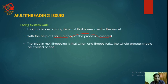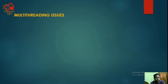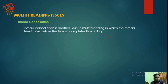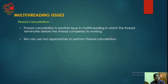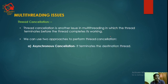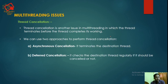The issue in multithreading is that when one thread forks, the question is whether the whole process should be copied or not. Next multithreading issue is thread cancellation — when a thread terminates before it completes its work. There are two approaches: asynchronous cancellation and deferred cancellation.